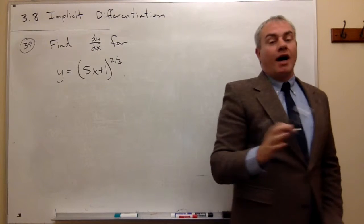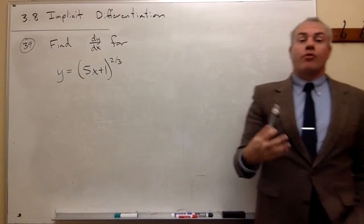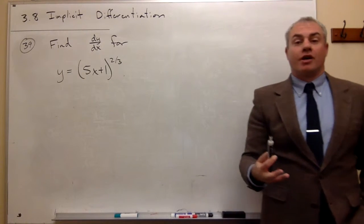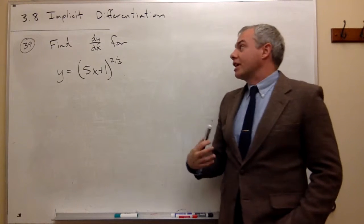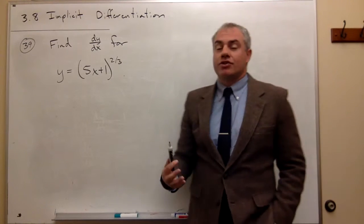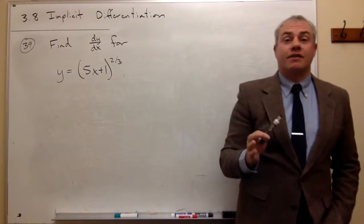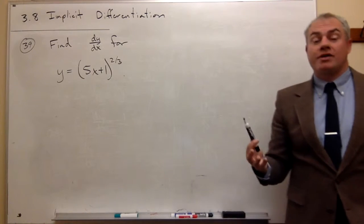Now, I can go through the normal process of using the chain rule here, but because we're using implicit differentiation in this section, I want to try this a slightly different way, and both ways are adequate.